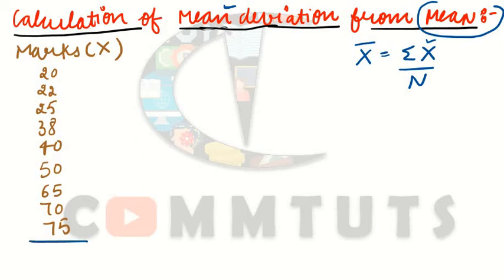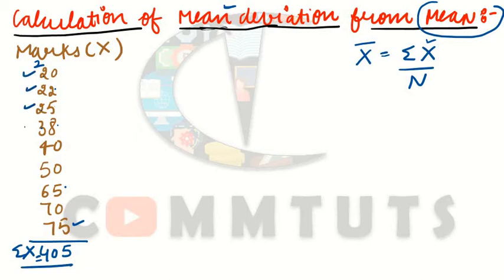First we calculate summation x by adding all values: 20 + 22 + 25 + 38 + 40 + 50 + 65 + 70 + 75. The total summation x equals 405. The number of observations n is 9 (counting 1 through 9).